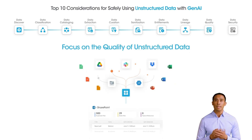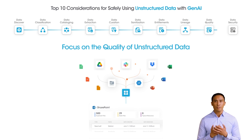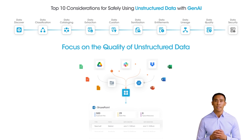Traditional measures of data quality, such as accuracy or completeness, may not apply to unstructured data. Instead, focus on data freshness, deduplication, and topic relevance to ensure only suitable data is used for Gen AI projects.